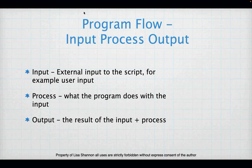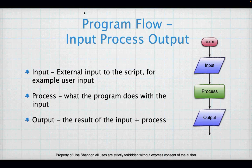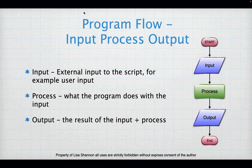So what is a program? A program consists of three steps: input, process, and output. Input is just getting data — getting information into your program so you can do something with it. Process is modifying that data. You're going to take some piece of information, let's say an age, and do something with it — maybe calculate when you can get Social Security. That's a process.